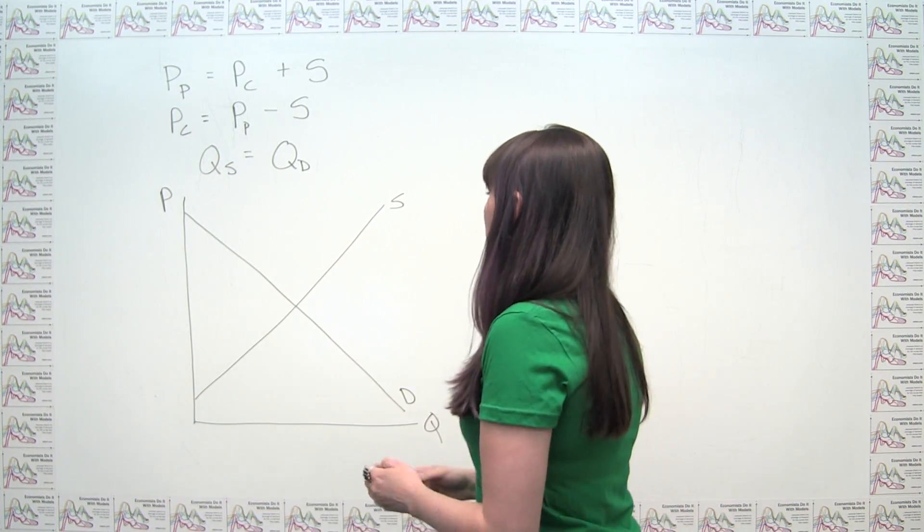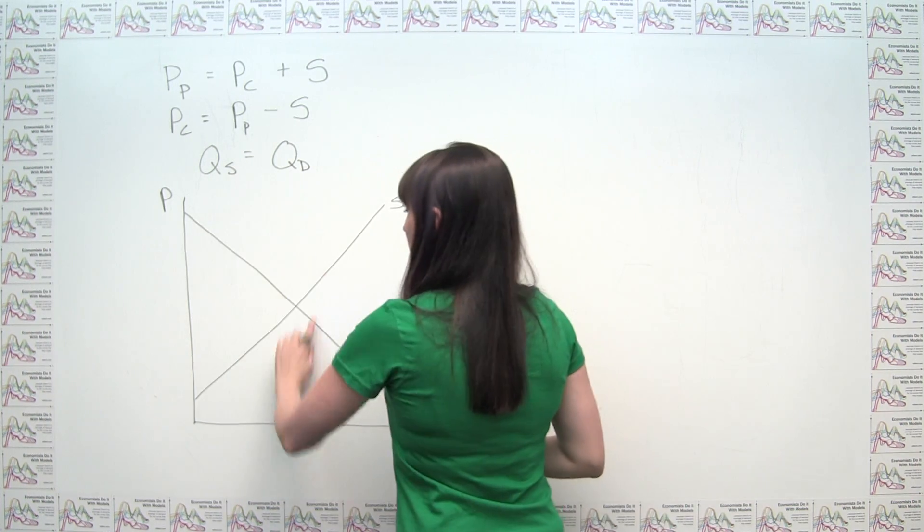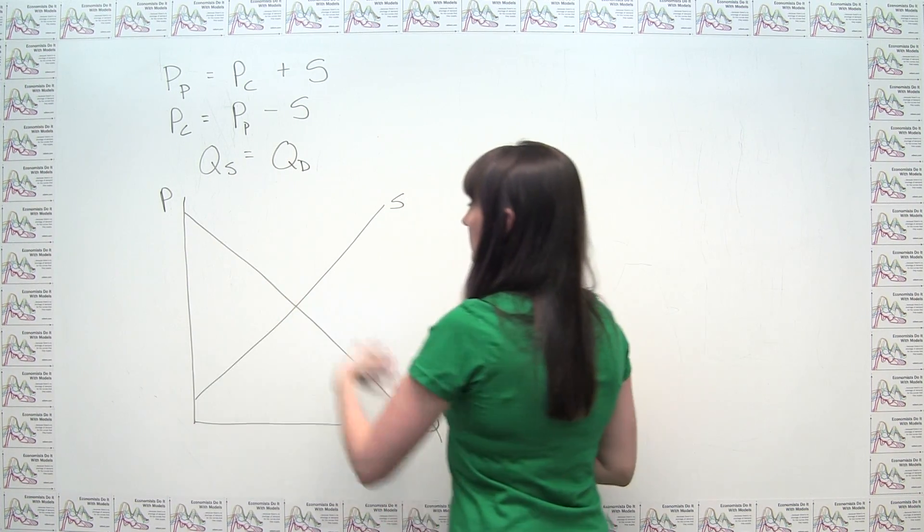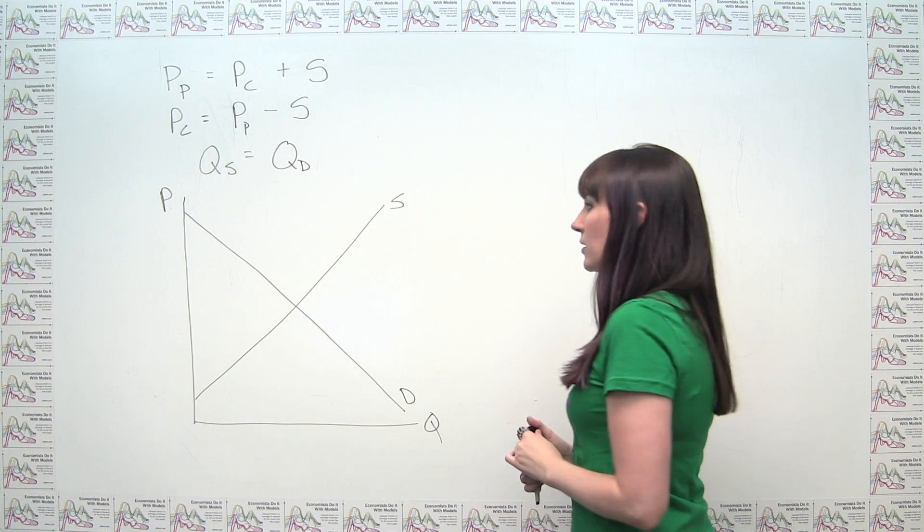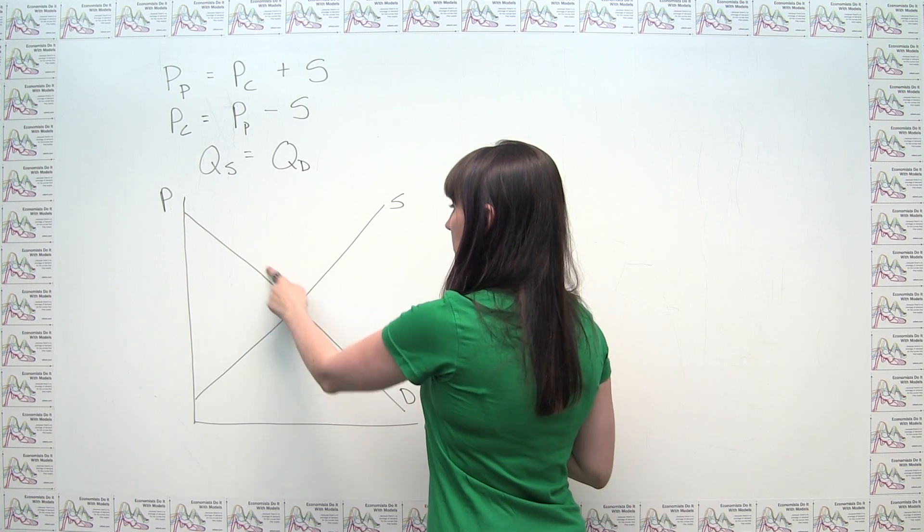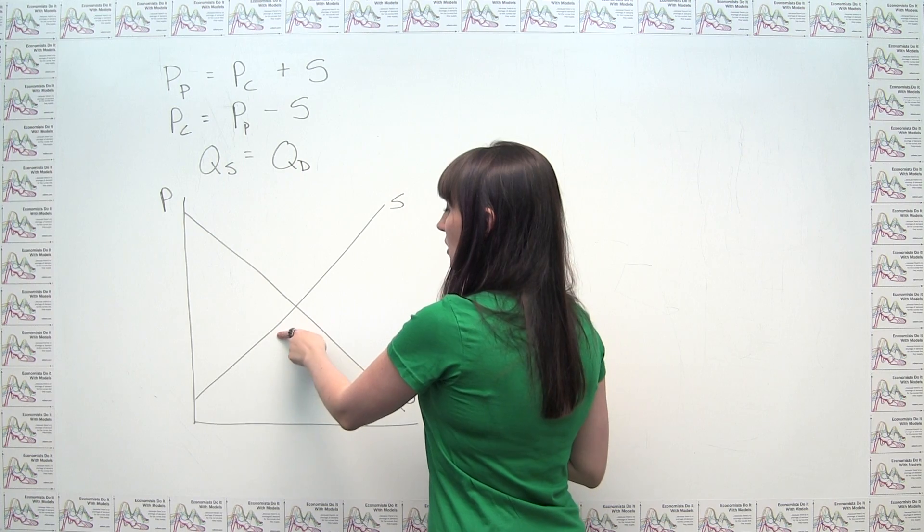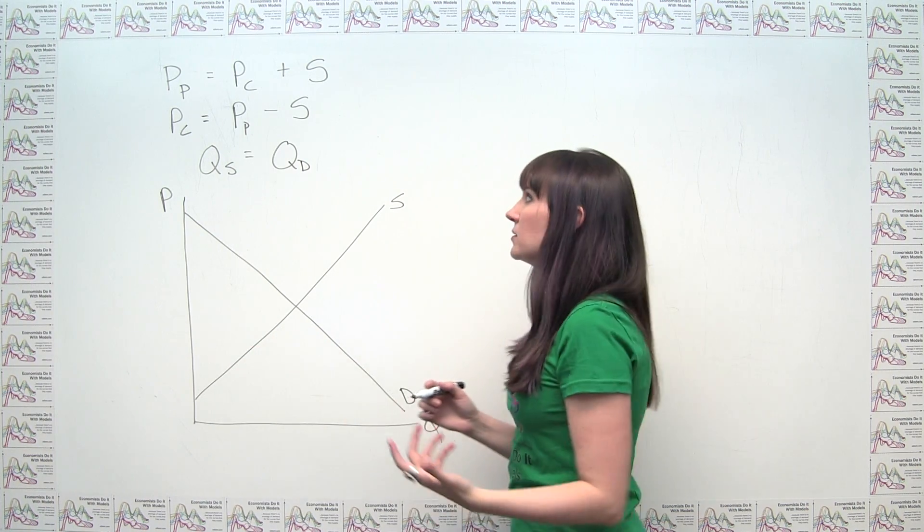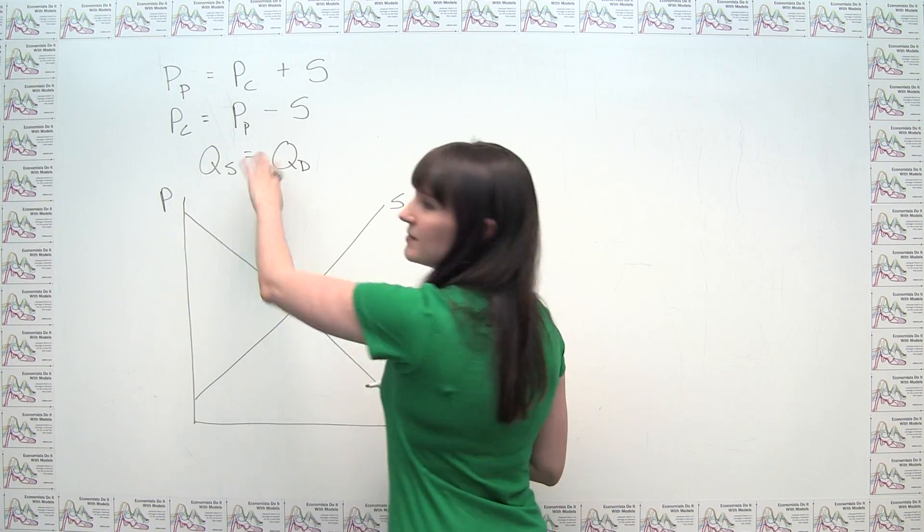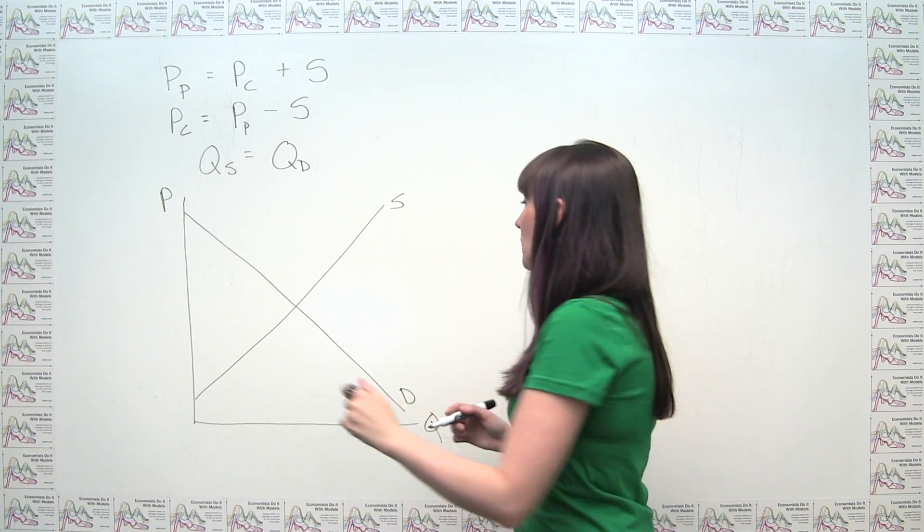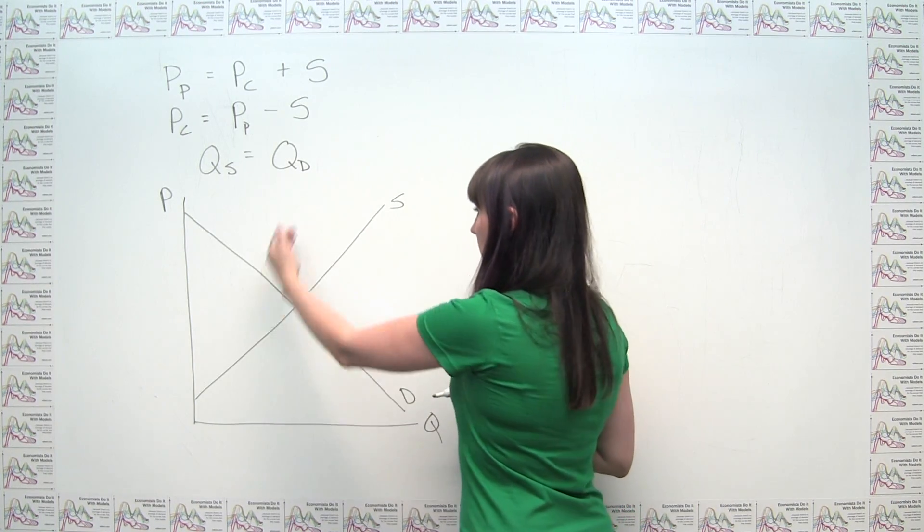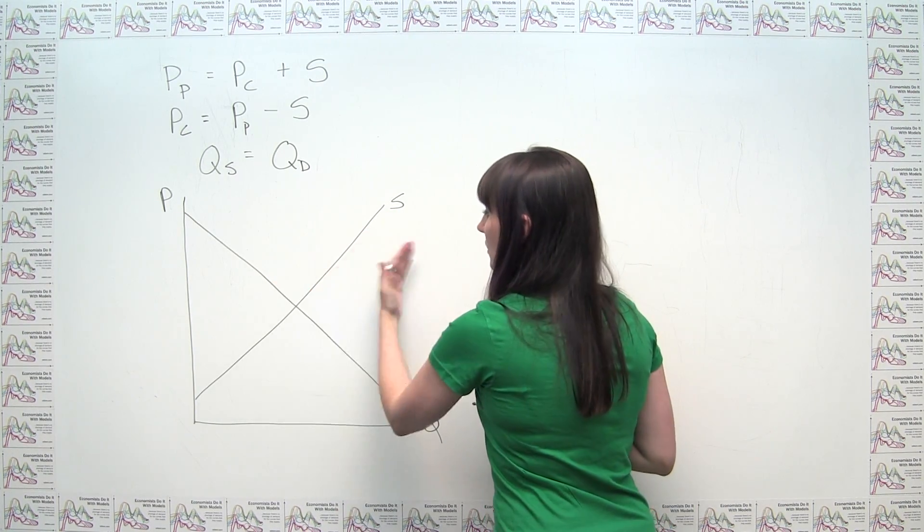So we can look here, we can say, well, in this region here, to the left of the intersection, this is all the places where the consumer's price, which is given by the demand curve, is larger than the producer's price. So you say, well, that's not what we're looking for here. So we know that we have to be looking for our equilibrium somewhere in the region here.